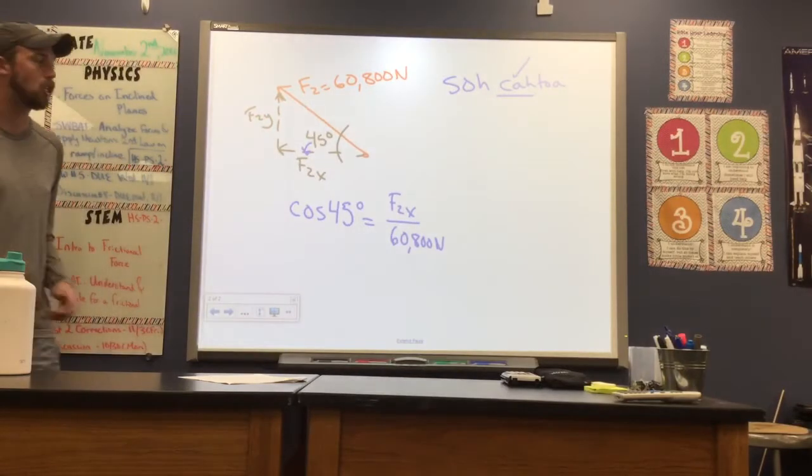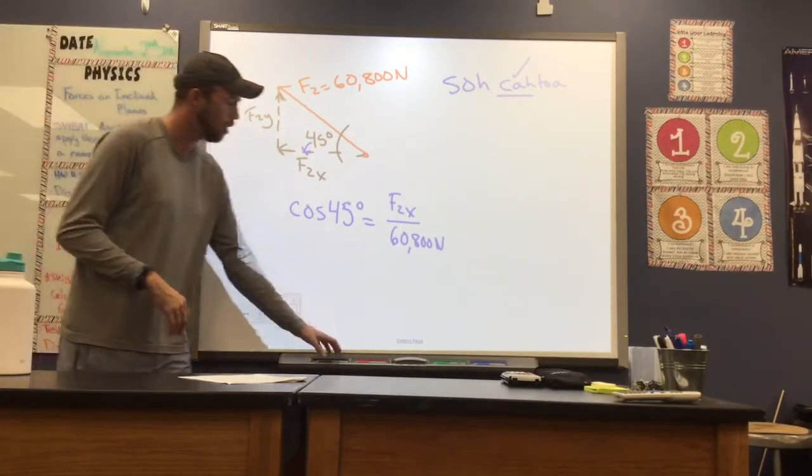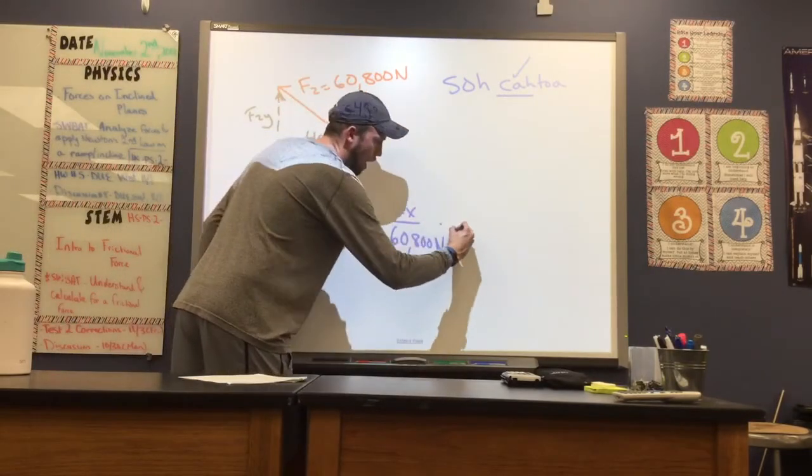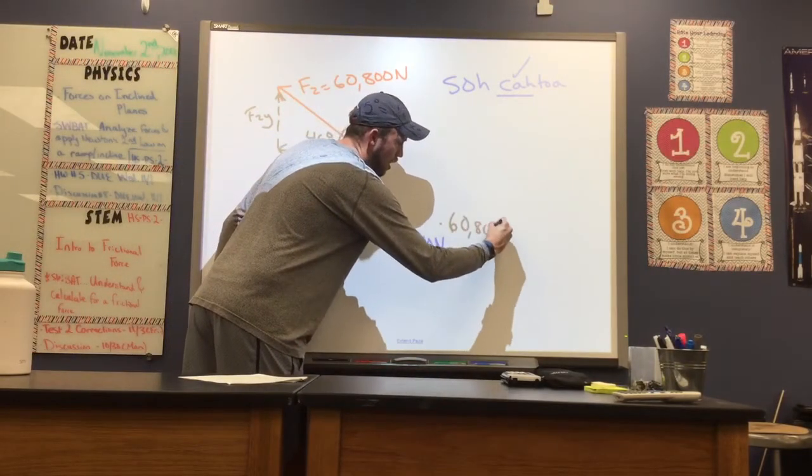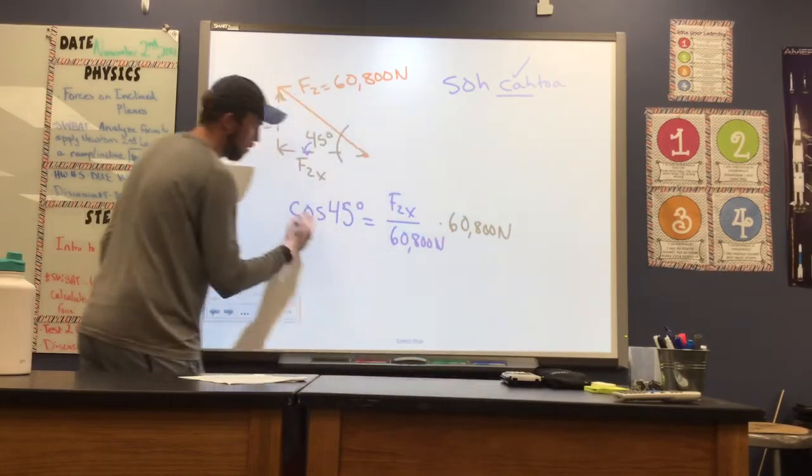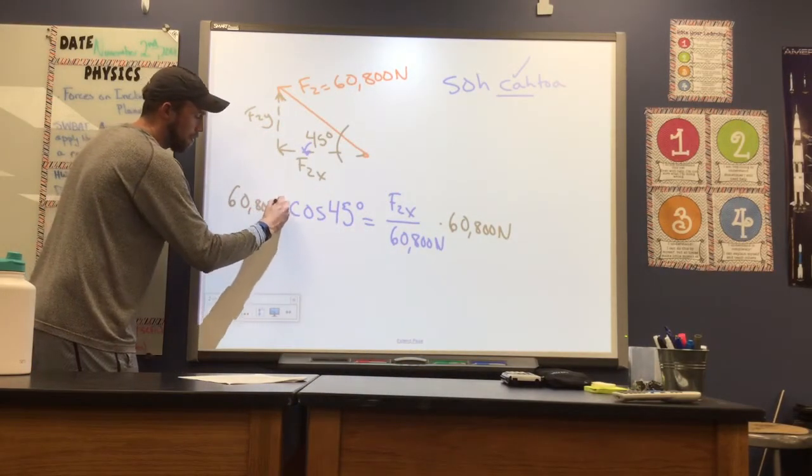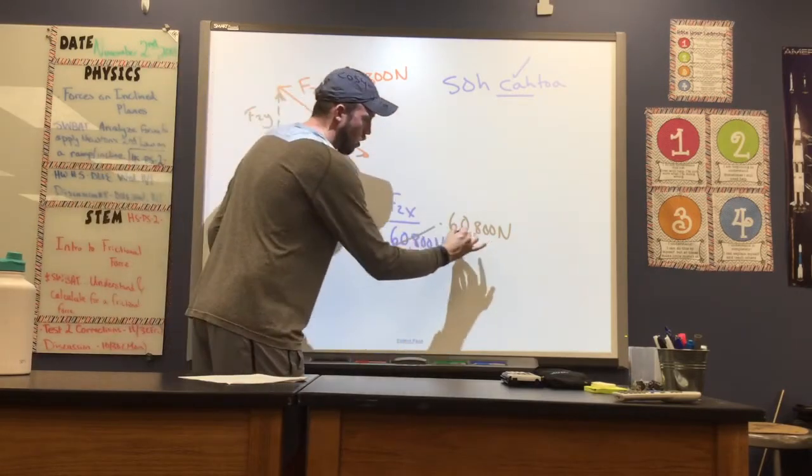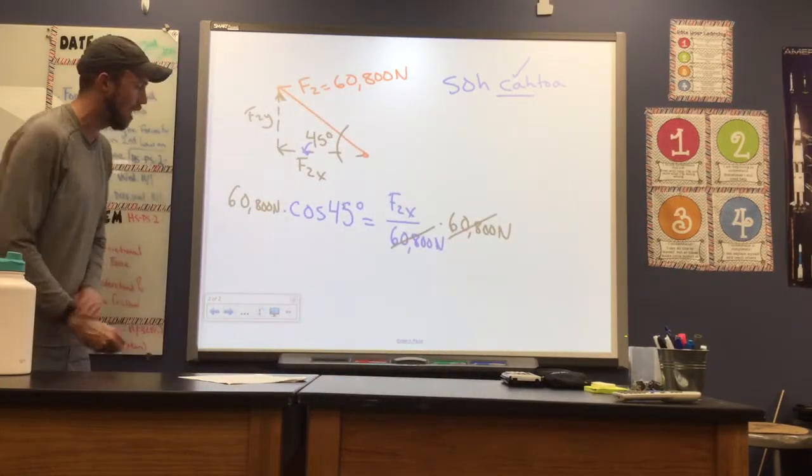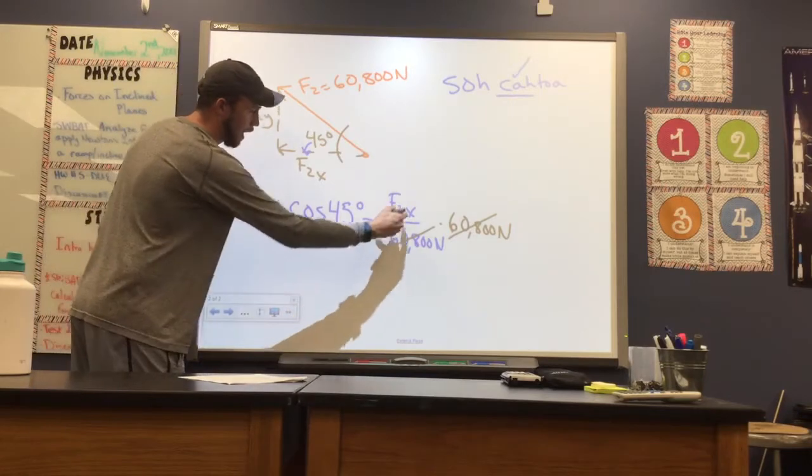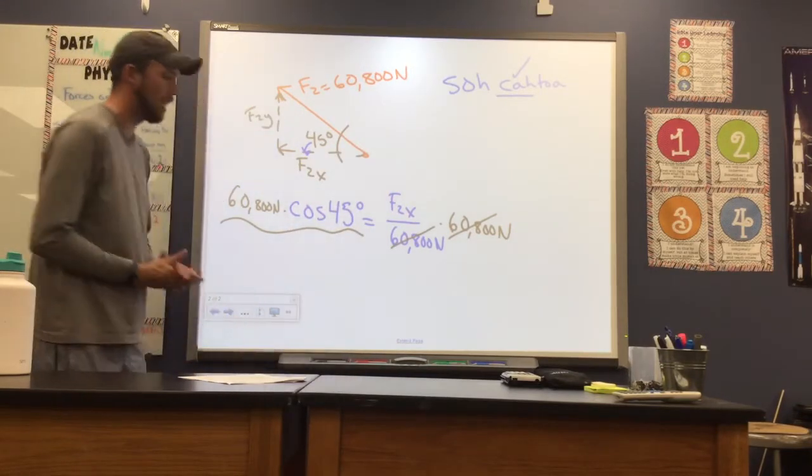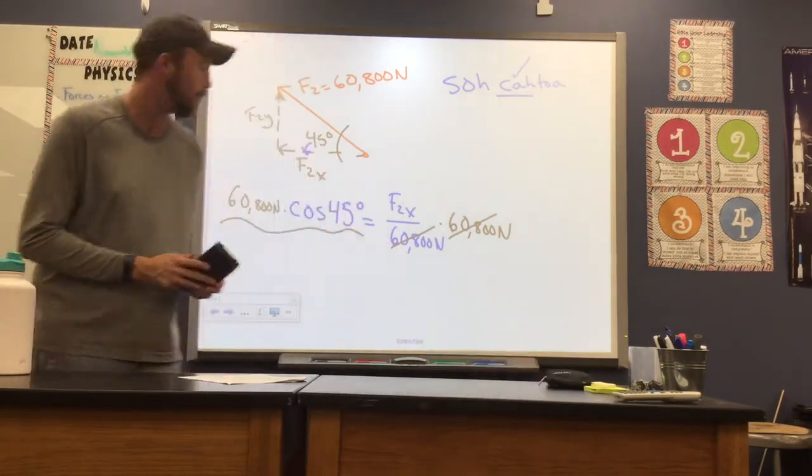Now in order for me to get F2 in the X by itself, looks like I need to do some multiplying here. I'm going to multiply this 60,800 newtons on both sides of my equation, because that equal sign in the middle tells me that when I do to one side, I have to apply to the other. So this 60,800 is going to cancel out. And this is what I'm going to plug in to find my F2 in the X direction.